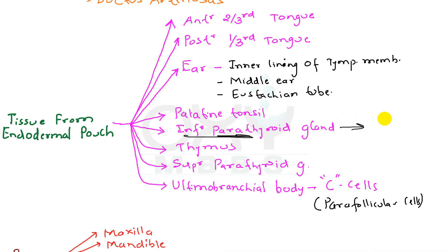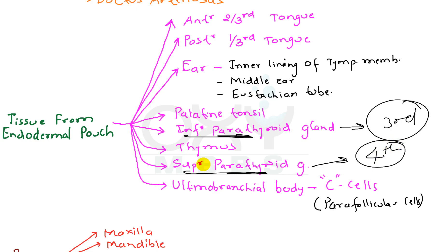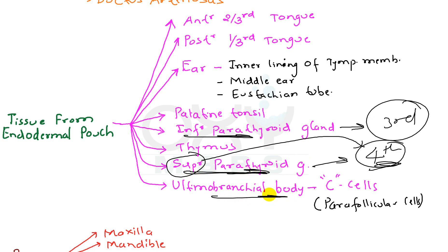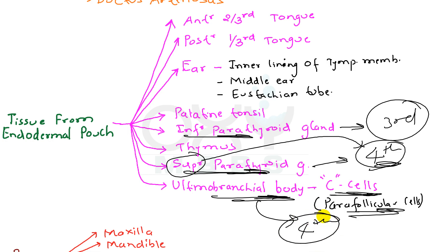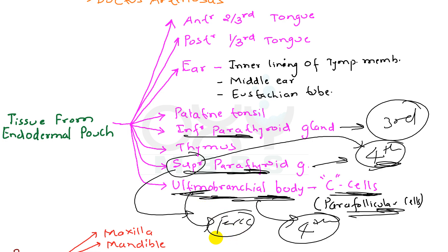So if the inferior parathyroid gland is derived from the third pharyngeal arch, then obviously the superior parathyroid gland is derived from the fourth pharyngeal arch — and superior people are very forceful. Similarly, the ultimobranchial body — and from it the C-cells or parafollicular cells — are also derived from the fourth pharyngeal arch, because ultimate people are also very forceful.